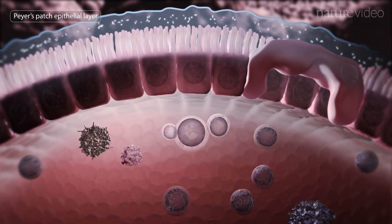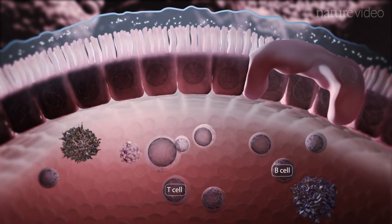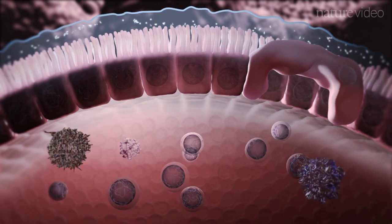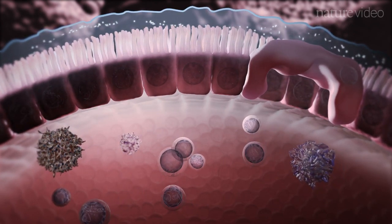Embedded within the matrix of the Peyer's patch is a mix of immune cells including T and B lymphocytes, macrophages, and dendritic cells. A key function of the Peyer's patch is the sampling of antigens, in this case mostly bacteria and bits of food.